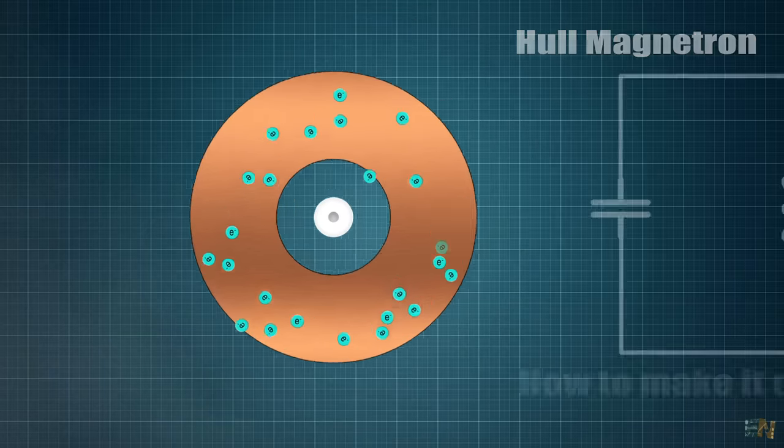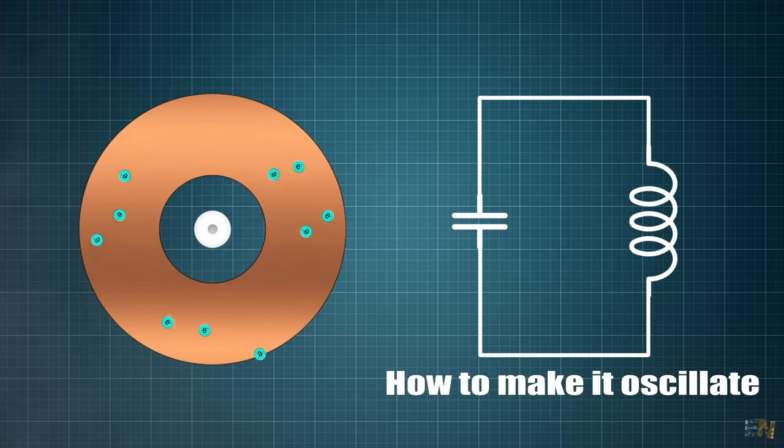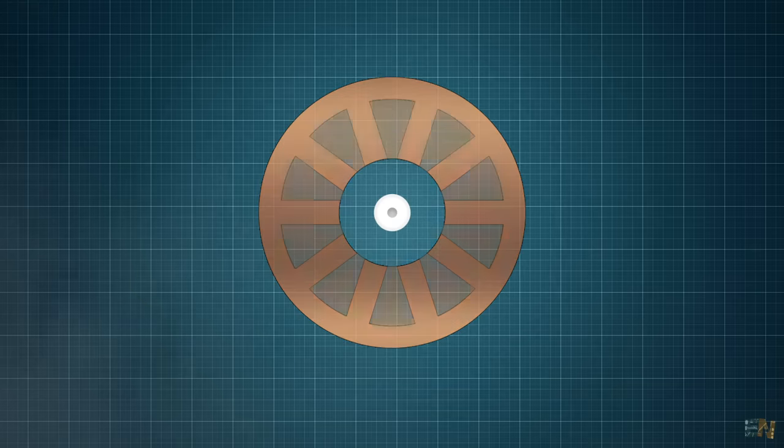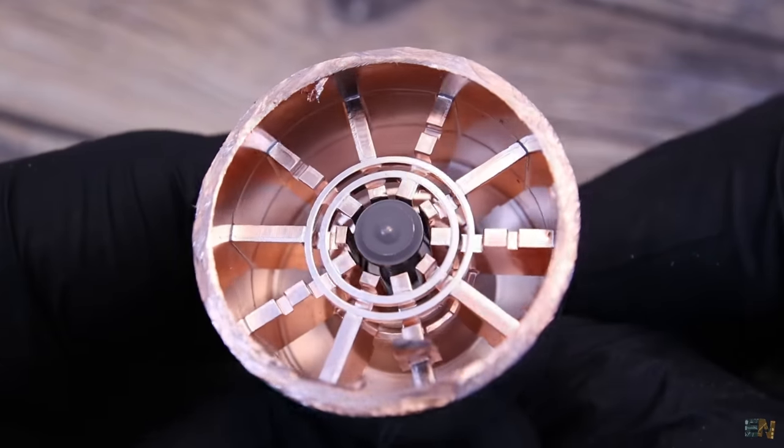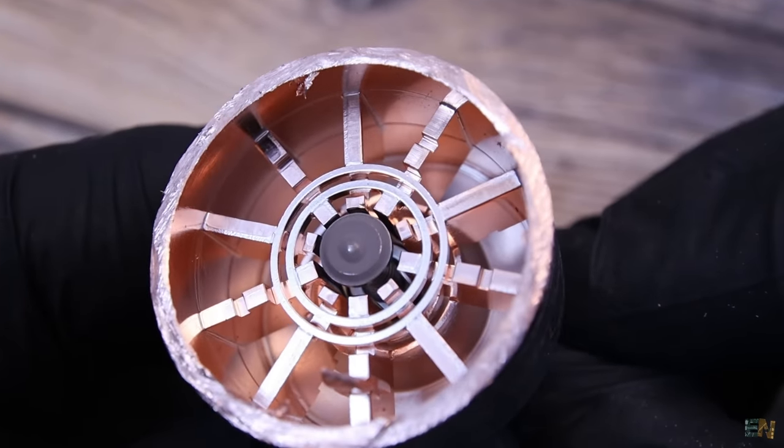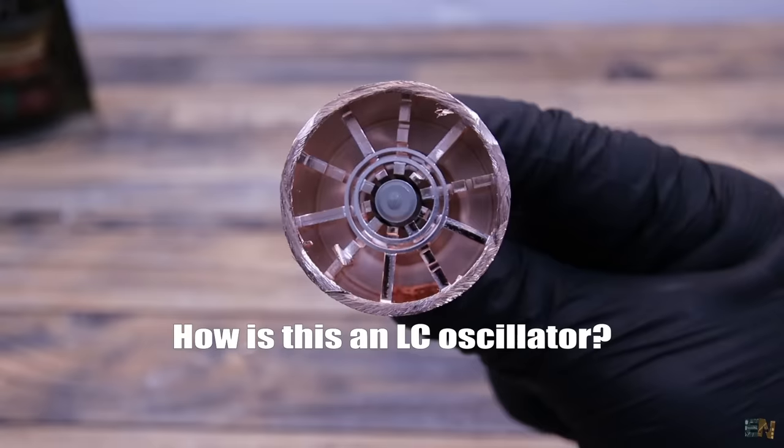To improve the efficiency even more, we have the previously seen LC oscillator. To achieve that oscillation, the anode is designed with cavities, as we've seen when we opened the magnetron tube. As you can see, we have 10 cavities made out of the same copper.